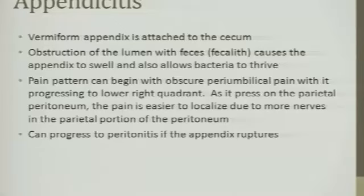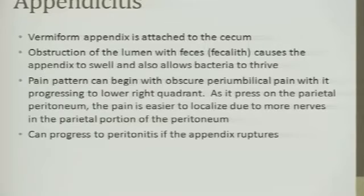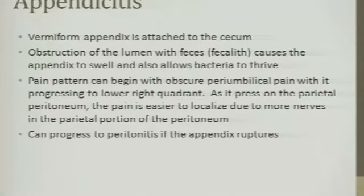It can start to fester with bacteria and enlarge. If it gets large enough, obviously it can rupture. We know the pain pattern: obscure periumbilical pain transitioning to right lower quadrant pain. The nerves — do we understand the difference between the visceral and the parietal peritoneum? The visceral peritoneum is the layer on the organ itself, covered with a serous membrane.